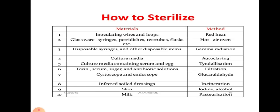How to sterilize? Inoculating wires and loops are to be sterilized by red heat method. Glasswares, syringes, petri dishes, test tubes, flasks etc. are to be sterilized by hot air oven. Disposable syringes and other disposable items can be sterilized by gamma radiation. Culture media by autoclaving. Culture media containing serum and egg by tyndallization. Toxin, serum, sugar and antibiotic solutions by filtration. Cystoscopes and endoscopes by glutaraldehyde. Infected soil dressings are to be incinerated. Skin by iodine or alcohol. Milk by pasteurization.